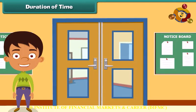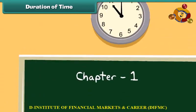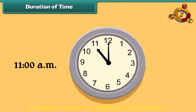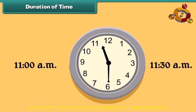The period of time during which anything lasts or exists is called the duration of time. For example, suppose in a school, lunch break starts at 11 AM and lasts up to 11:30 AM. Then we can say that the duration of lunch time in the school is 30 minutes.